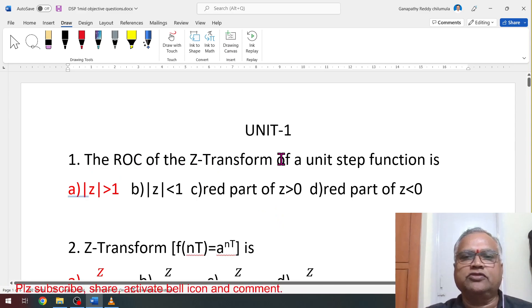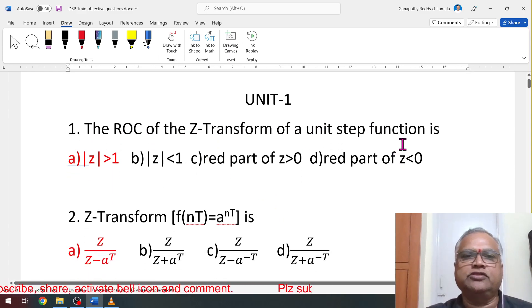The ROC of a Z-transform of a unit step function is: unit step function, unit step is a causal signal existing on the right side, so ROC always mod z greater than 1.